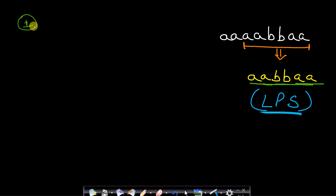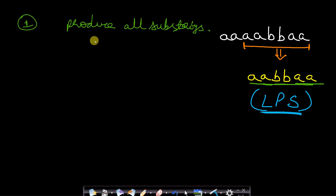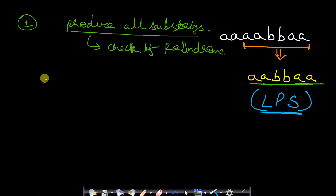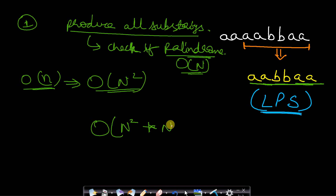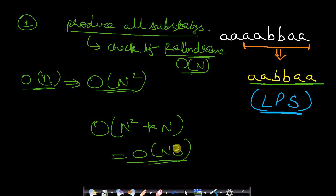The first method is brute force: produce all possible substrings, then check each one if it is a palindrome. For a string of length n, there are O(n²) possible substrings, and checking whether a given string is a palindrome takes O(n) time. Therefore this brute force method will take O(n³) time.